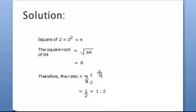Now that we know what the square of 2 is and what the square root of 64 is, we find the ratio of those two numbers. The ratio of 4 to 8 can be written as a fraction, 4 over 8.